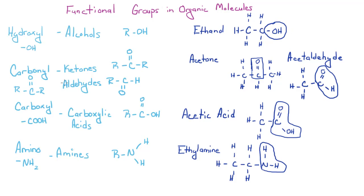We next have carbonyl groups, which have the structure of a C with a double-bonded oxygen and two other groups on either side. You have ketones and aldehydes. The only difference between ketones and aldehydes is that one of the R groups has to be a hydrogen for an aldehyde. An example of a ketone would be acetone, or nail polish remover. And an example of an aldehyde is acetaldehyde, which is believed to cause hangovers when you drink too much. You can see the double-bonded oxygen and the hydrogen for the aldehyde, and the double-bonded oxygen and the two methyl groups for the ketone.